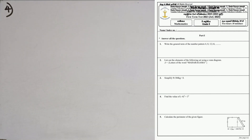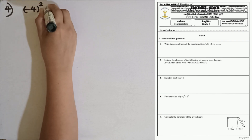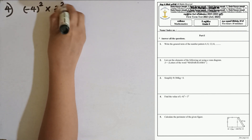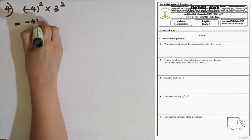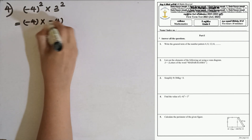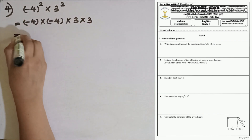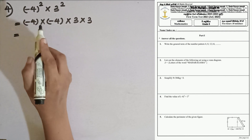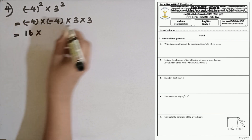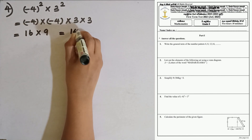Question number 4. Find the value of (-4)² × 3². Expanding: minus 4 multiplied by minus 4, then 3 multiplied by 3. 4 times 4 is 16. The multiplication of two negative numbers becomes positive, so 16. 3 times 3 is 9. 16 multiplied by 9 gives the answer 144.